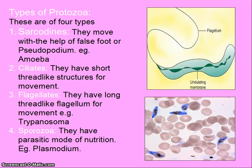There are four types of protozoa. The first is sarcodines — they move with the help of a false foot or pseudopodium; example is amoeba. The second is ciliates — they have short thread-like structures for movement called cilia. The third is flagellates — they have a long thread-like flagellum for movement; example is Trypanosoma. The fourth is sporozoa — they have a parasitic mode of nutrition; example is Plasmodium.